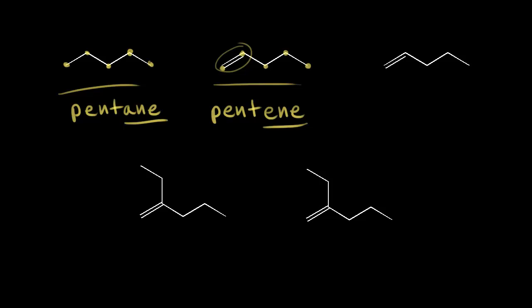We want to number it to give the lowest number possible to our double bond. Starting from the left: carbon one, two, three, four, and five. Our double bond starts at carbon one, so we could write 1-pentene. If you leave the one off, it's implied the double bond starts at carbon one. If we numbered from the right, the double bond would start at carbon four — that's 4-pentene, which is incorrect. Our goal is to give the double bond the lowest number possible, so we'd call it 1-pentene, or just pentene.